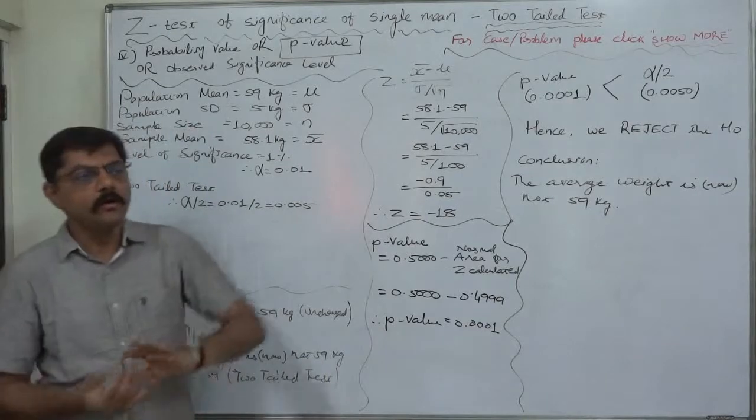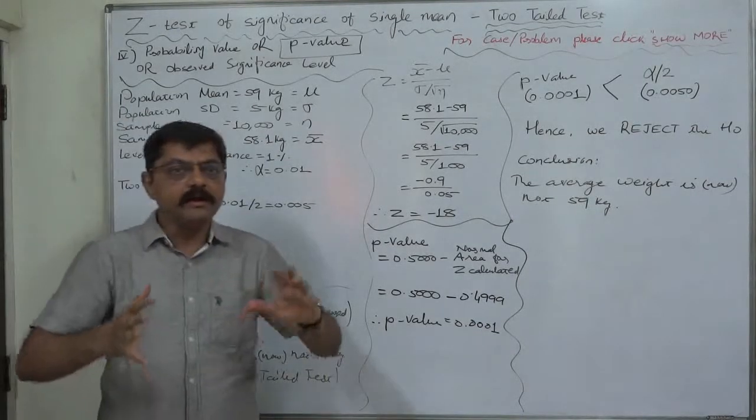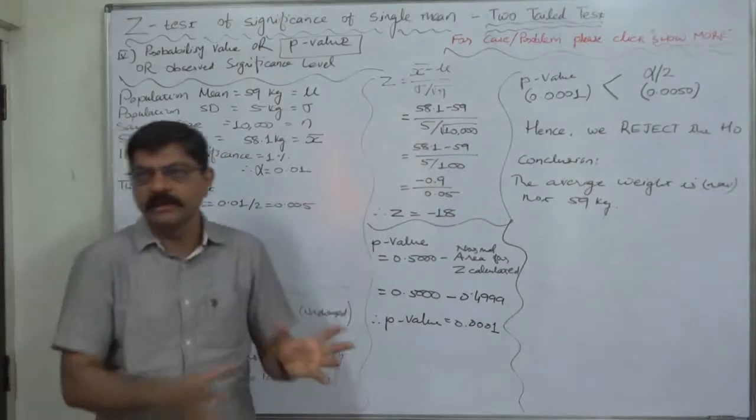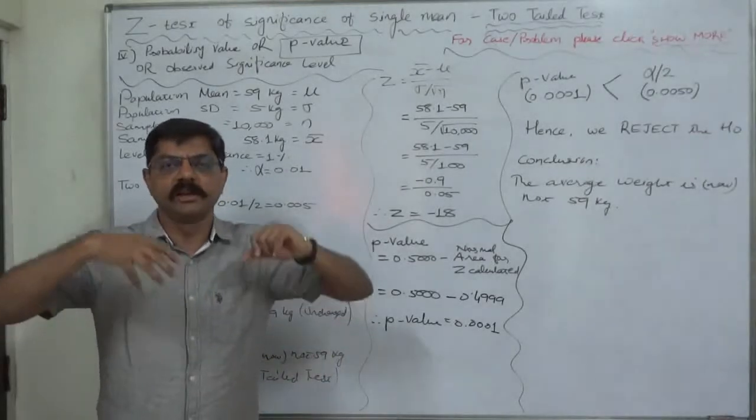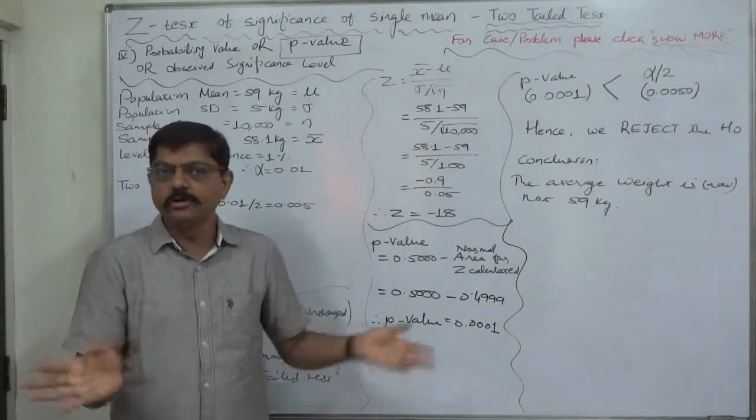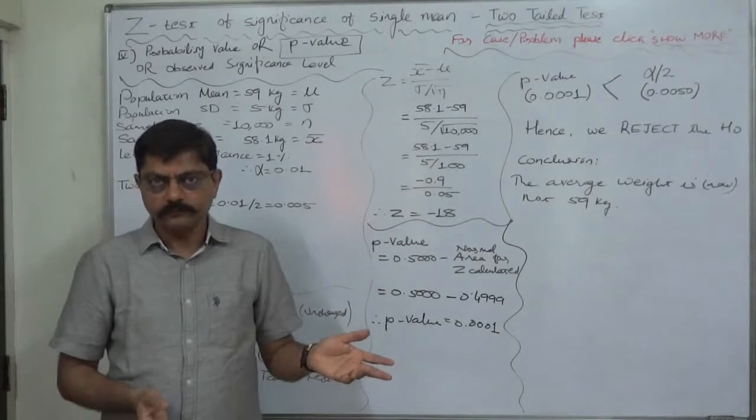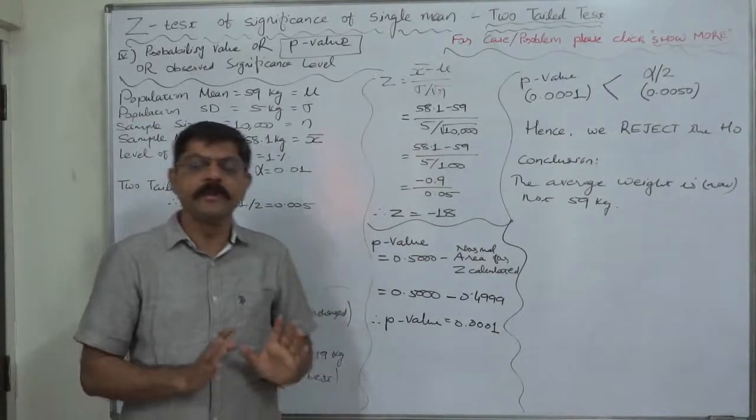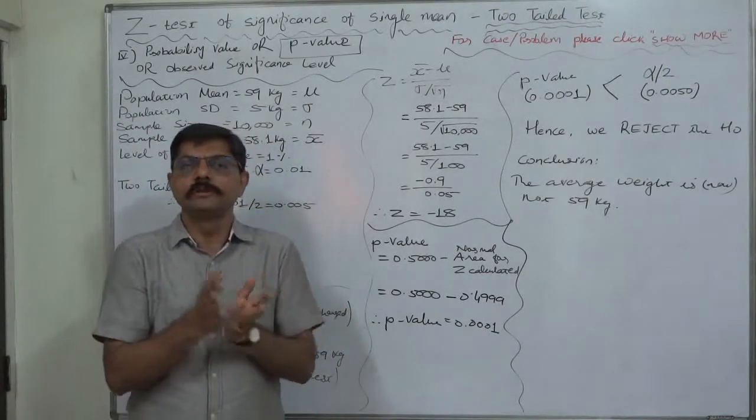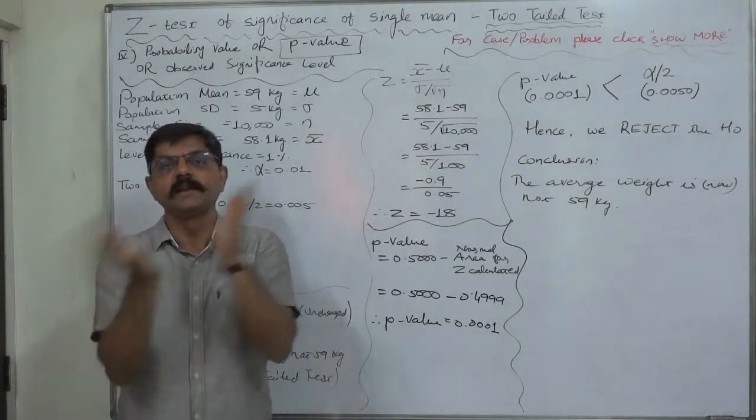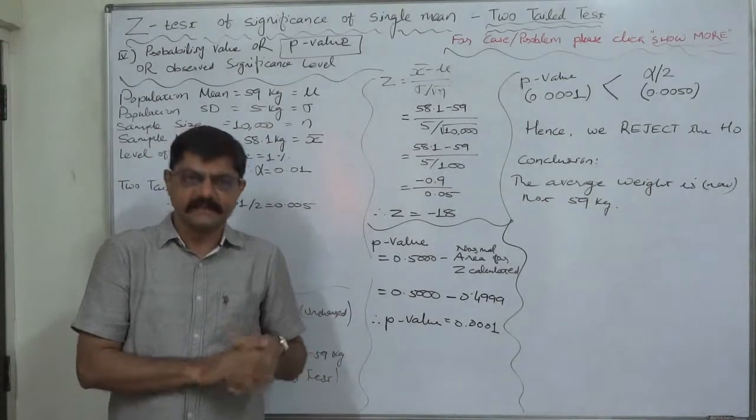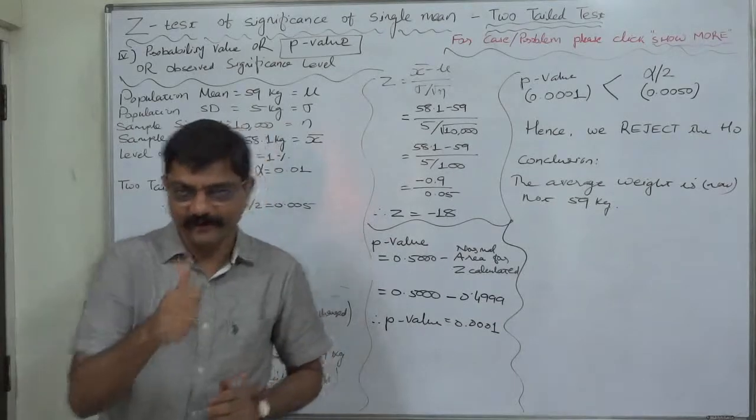So, never go for hard comparison that particular method is my favorite. So, I will use that only. No. I also use any of four. But whenever it is left upon me, I prefer to use the method of comparison between critical value and observed value of test statistic. That's it. Thank you very much.